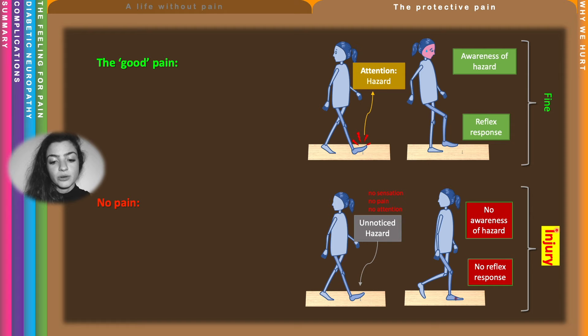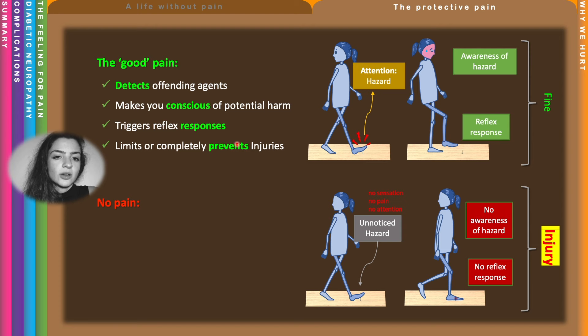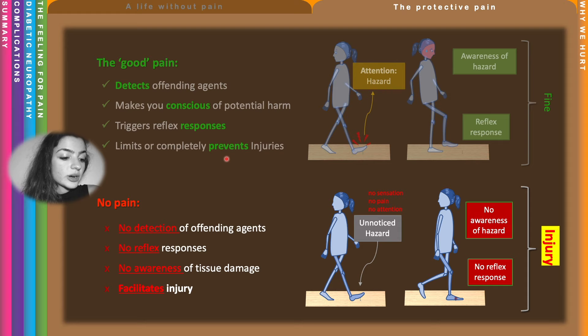In healthy conditions, pain detects harm, makes you conscious of it, triggers reflex responses, and limits or completely prevents injury. The lack of pain does exactly the opposite: no detection of harm, no reflex responses, no awareness, and injuries are facilitated.